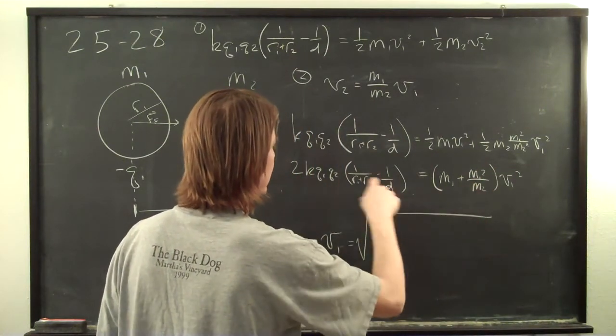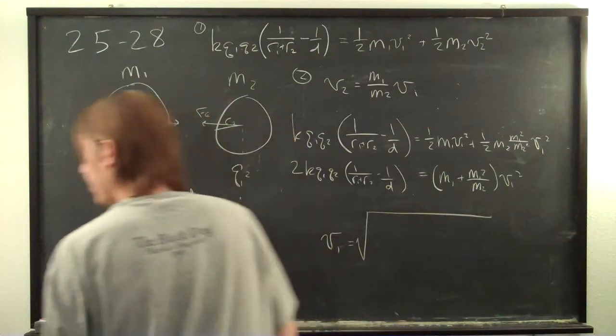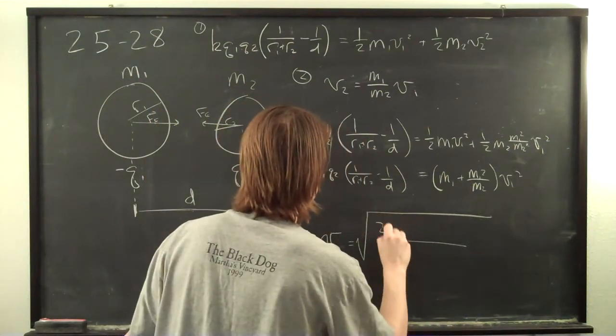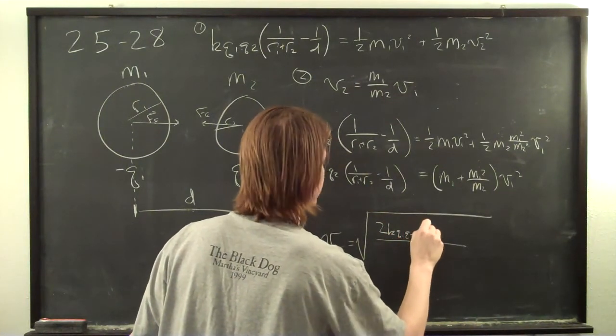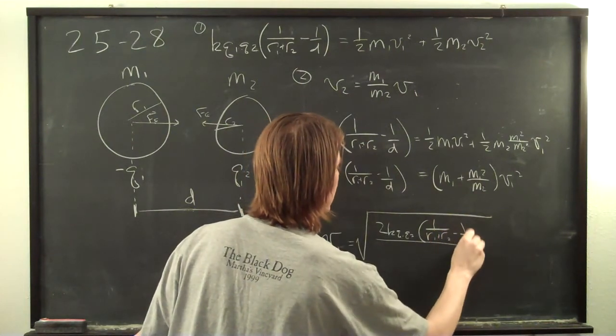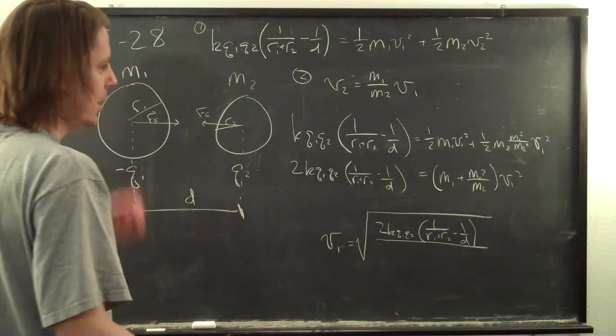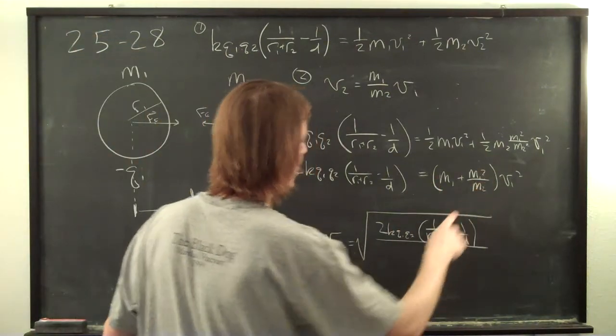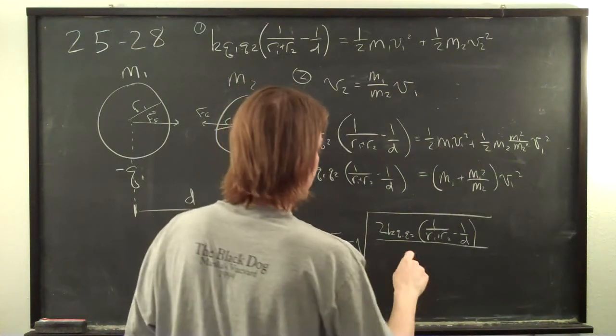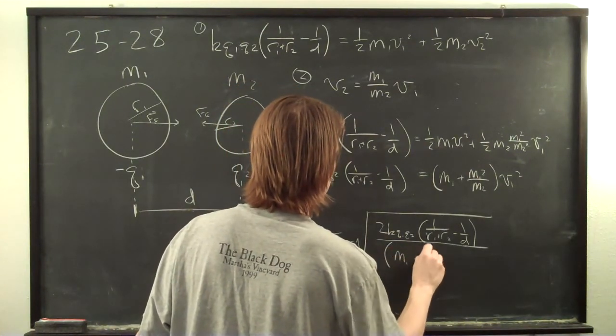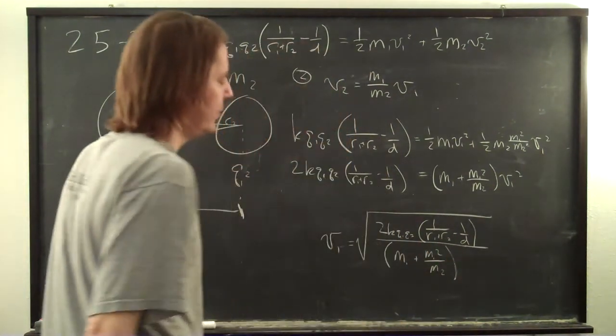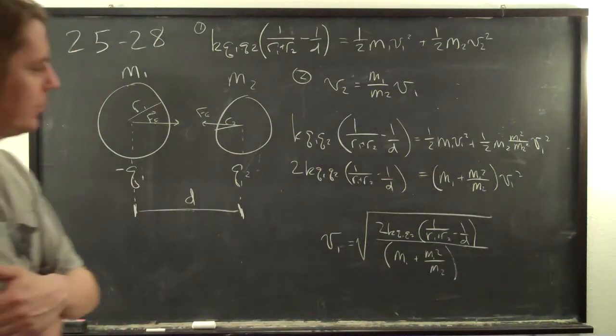So up top, we have this part 2 k q1 q2, 1 over r1 plus r2 minus 1 over d, right? And at the bottom, we just have this part, m1 over m1 squared times m2. And that's it. That's v1. That's about as simple as it can get.